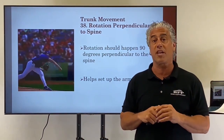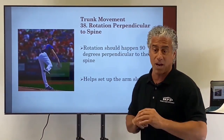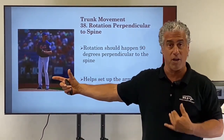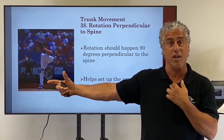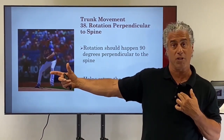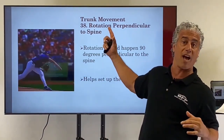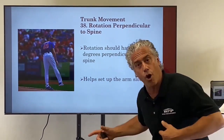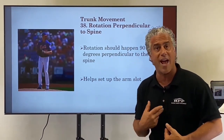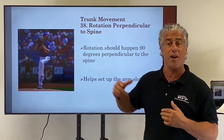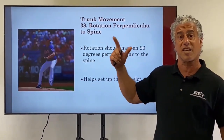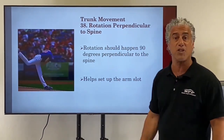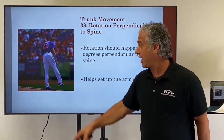When we throw we want our shoulders to be perpendicular to the spine. This also helps set up the arm slot. For sidearm guys, over-the-top guys, low submarine guys — we're always looking for that perpendicular axis so that no matter where the arm slot is, it will help set up that arm slot and create efficient energy transfer up the chain.